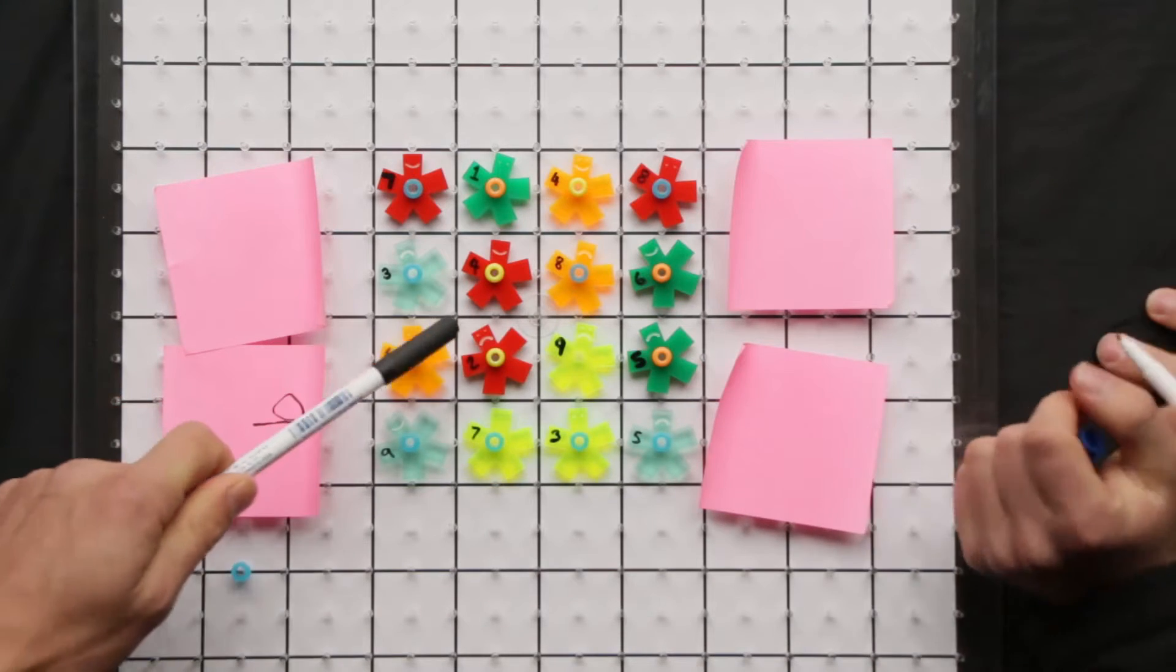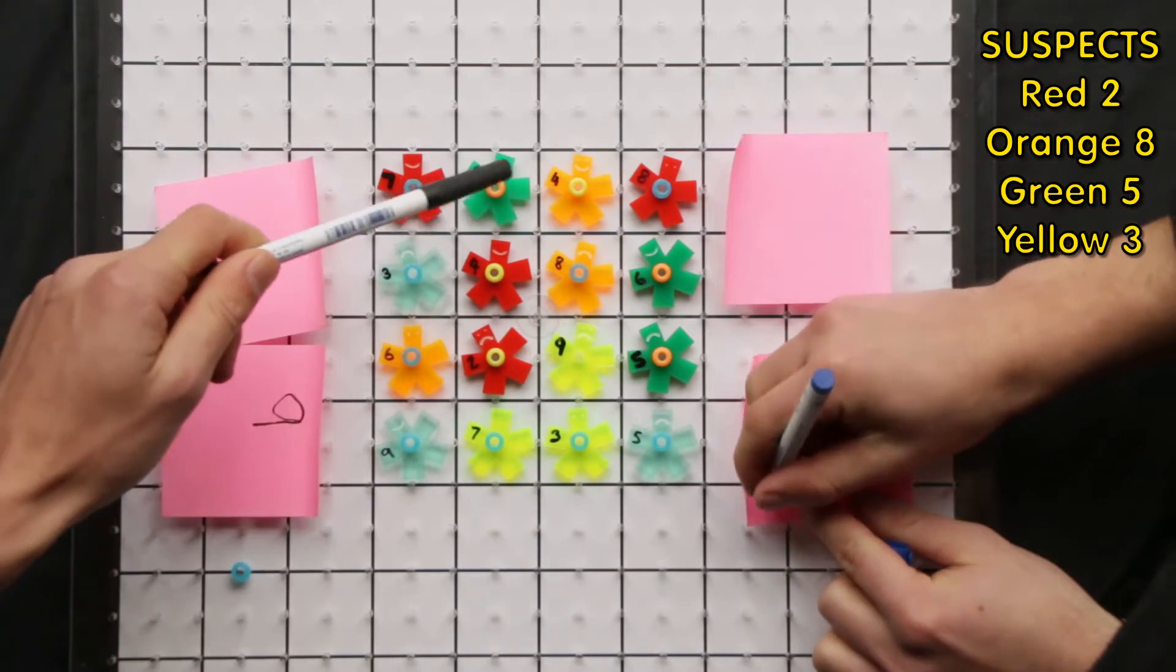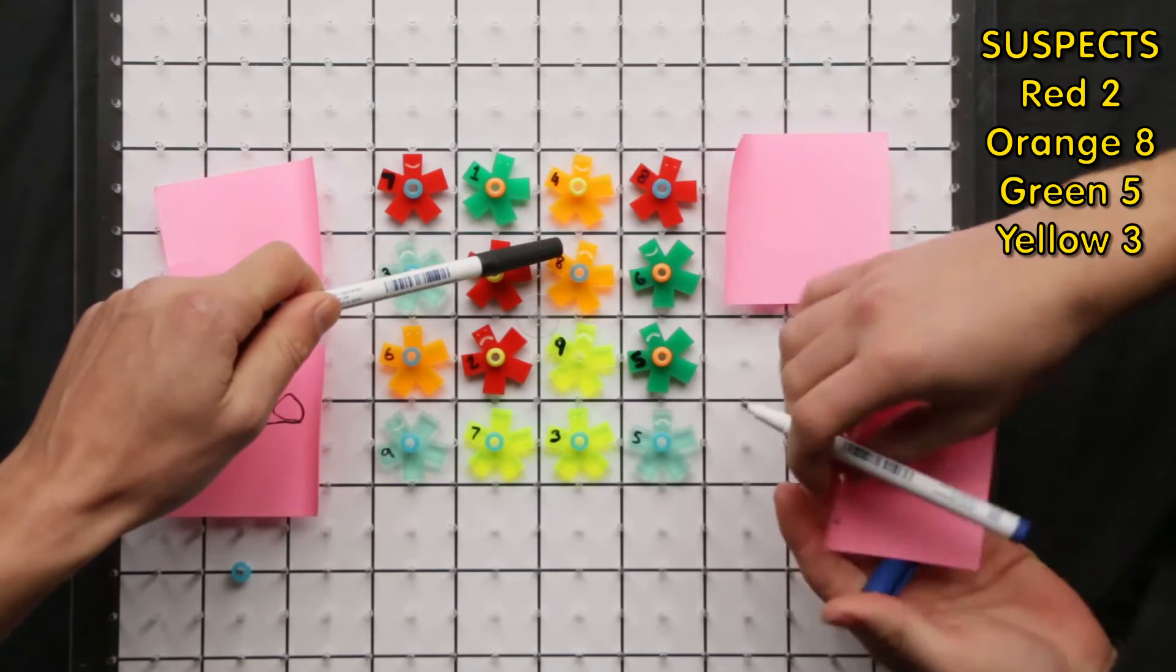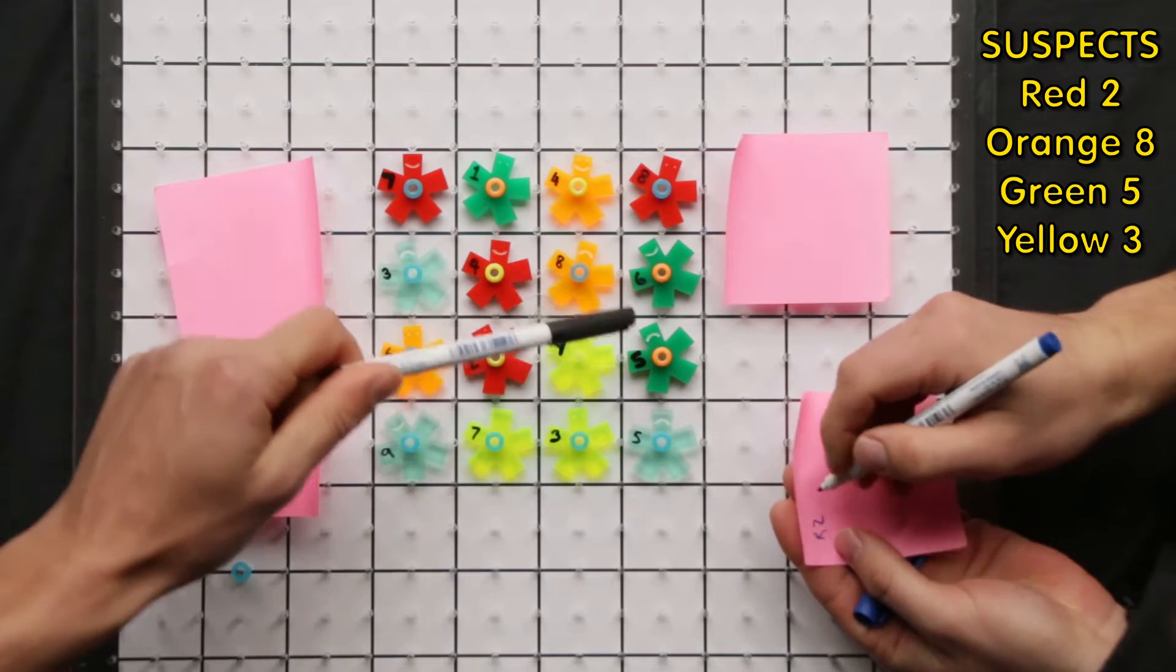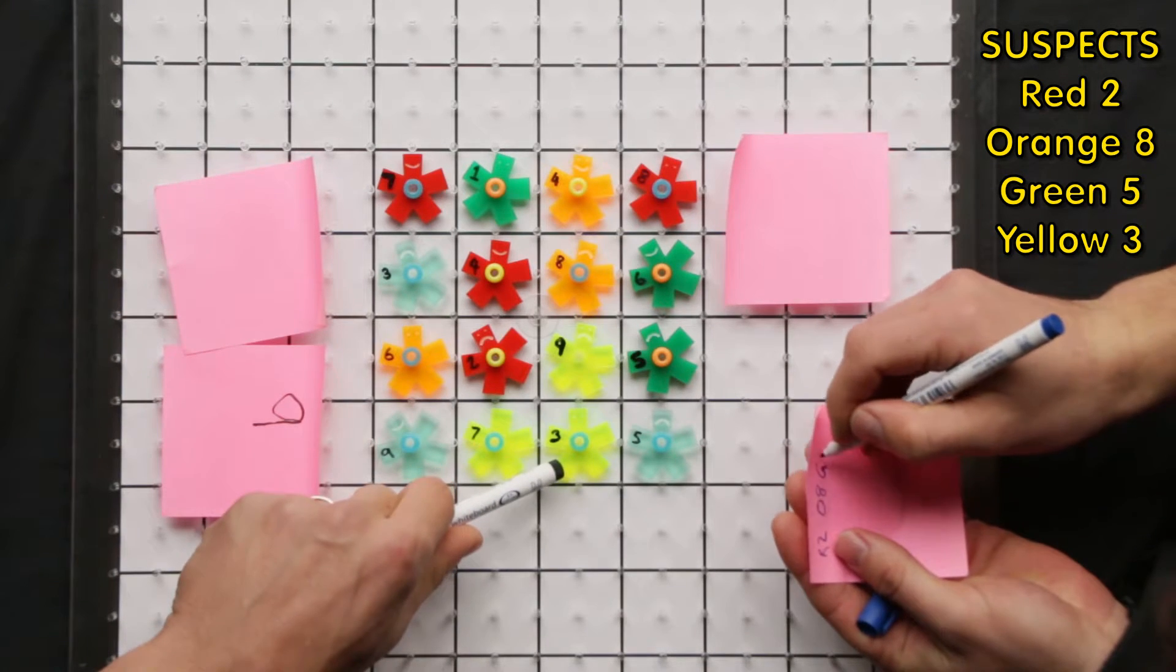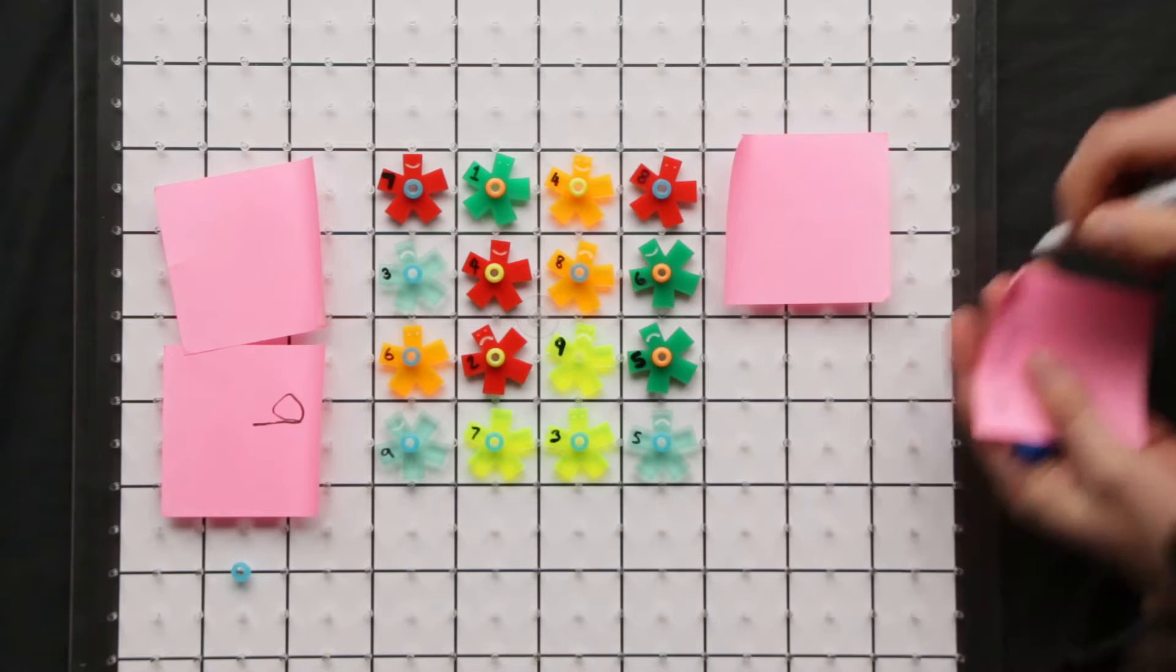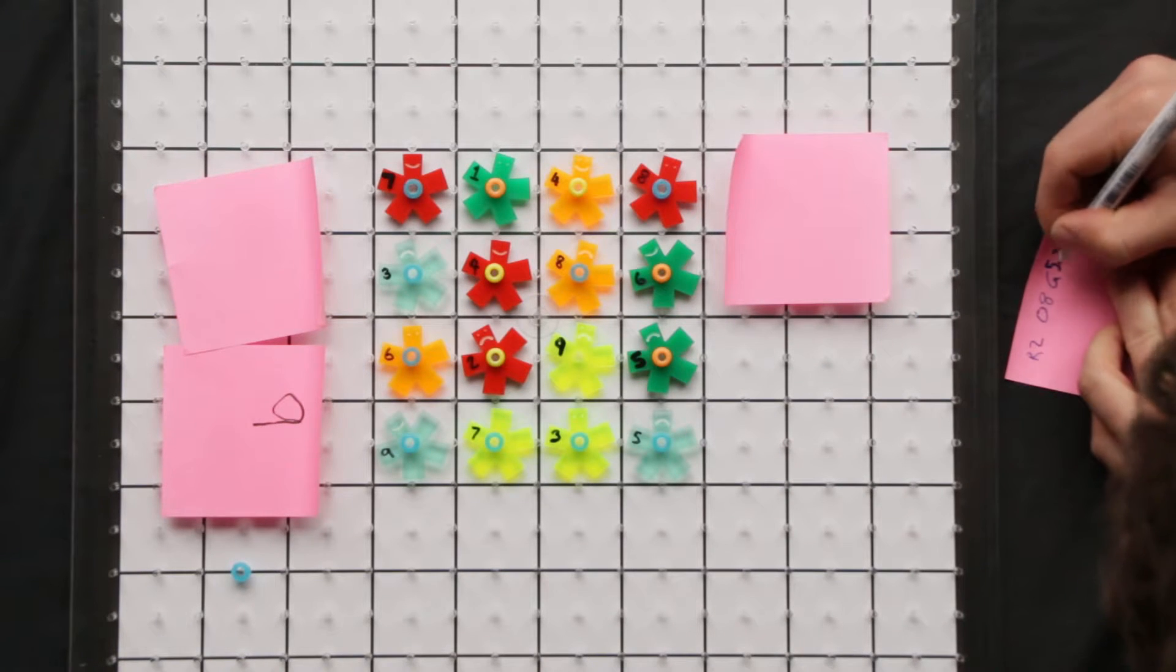And Tim now writes down the four suspects around the nine. So those suspects are red two, orange eight, green five, and yellow three. They're the only players that I could be.